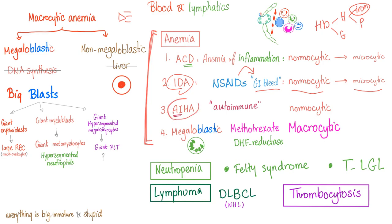Next, autoimmune hemolytic anemia. Why? Because Rheumatoid arthritis is an autoimmune disease. And as you know, autoimmune hemolytic anemia is normocytic. Now let me ask you a tough question: is it the warm subtype or the cold subtype? Please let me know the answer in the comment section.